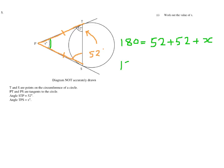So 180 equals 104 plus x. So I take 104 away from both sides. It's 180 take away 104 will equal x. And so now I can just give my answer. x equals 76 degrees.